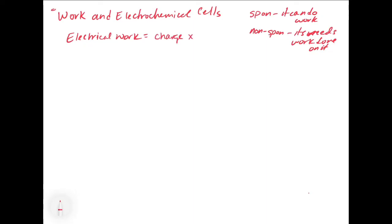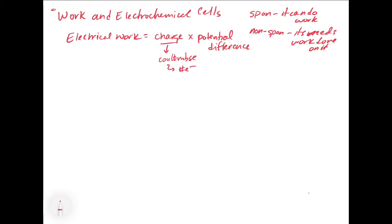Electrical work is equal to the charge times the potential difference. Charge is related to how many electrons are passed. Each electron has its own discrete charge, and every time we send an electron through an external circuit, if we add all that charge up over a given amount of time, that is the charge inside our cell. So the charge, which has units of coulombs, is proportional to the number of electrons that we pass.